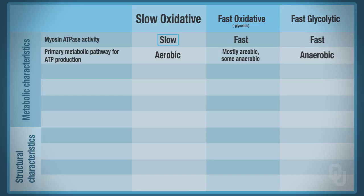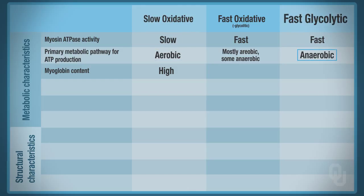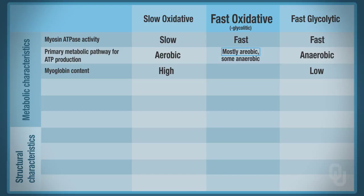Because slow oxidative is slow and does aerobic respiration, and aerobic respiration requires oxygen, and myoglobin binds oxygen, you should have a high level of myoglobin in that fiber type. In anaerobic respiration we're not using oxygen, therefore fast glycolytic has low myoglobin content. In fast oxidative, where we're doing mostly aerobic respiration, you're going to have a high myoglobin content as well because you're utilizing a lot of oxygen.